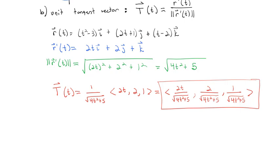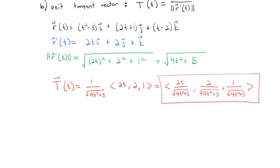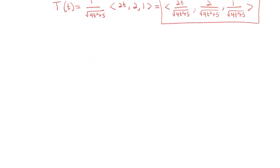We're going to come back to unit tangent vectors in future sections and explain why they're so important when working with vector-valued functions. But for now, we can find them generally or at a specific point — for example, if t = 7 we could evaluate that. Now let's step away from derivatives and look at the second half of calculus: integration. Just like derivatives, we can take the antiderivative of each component.